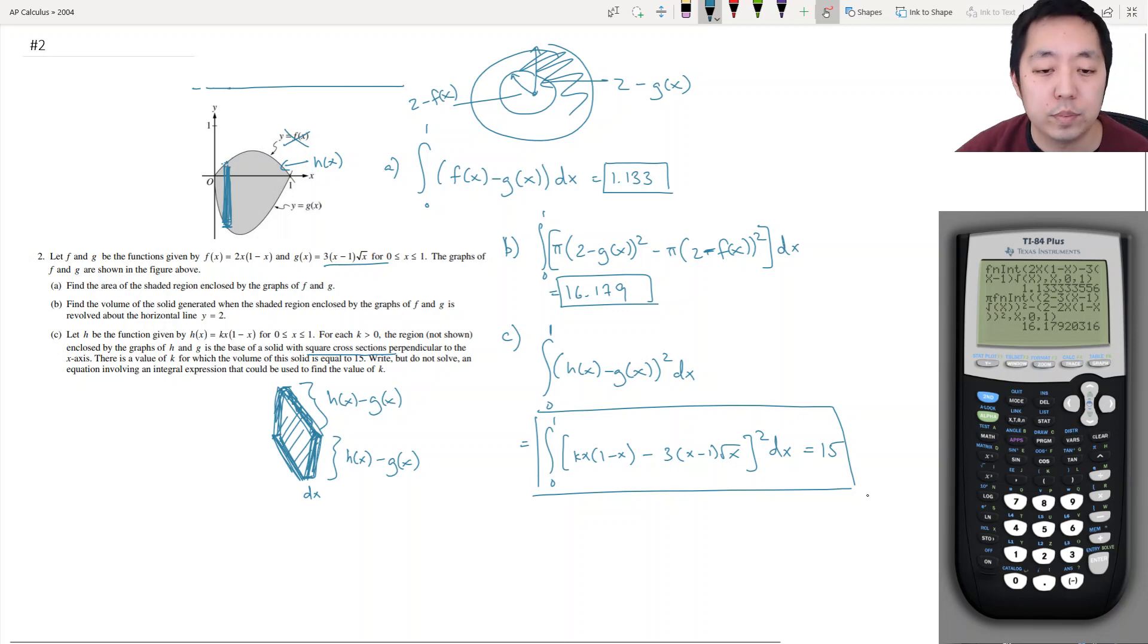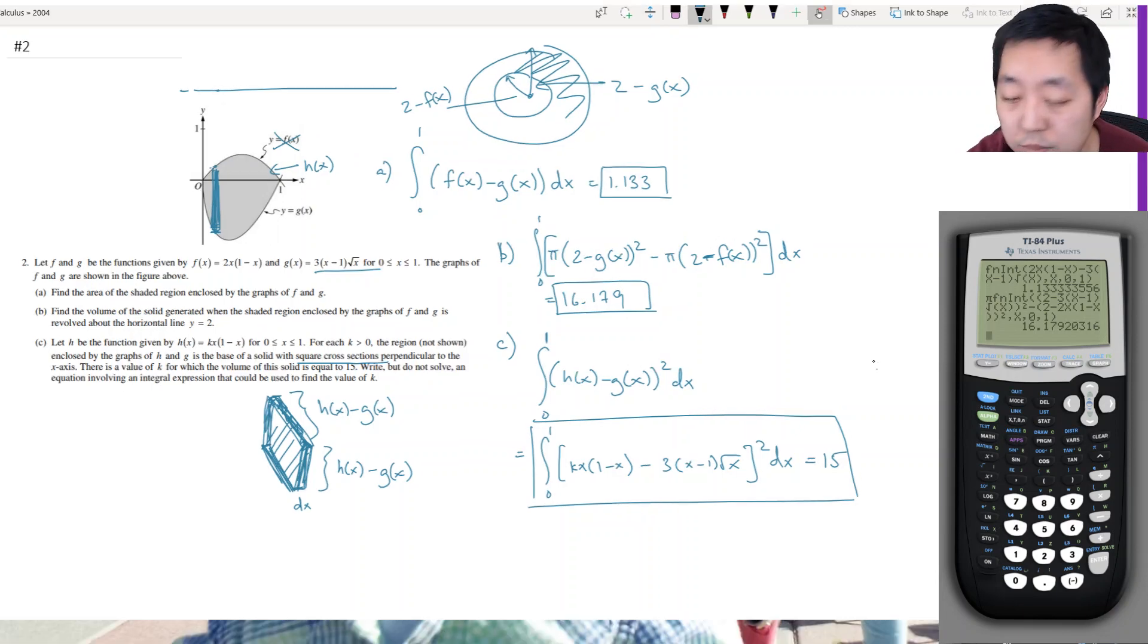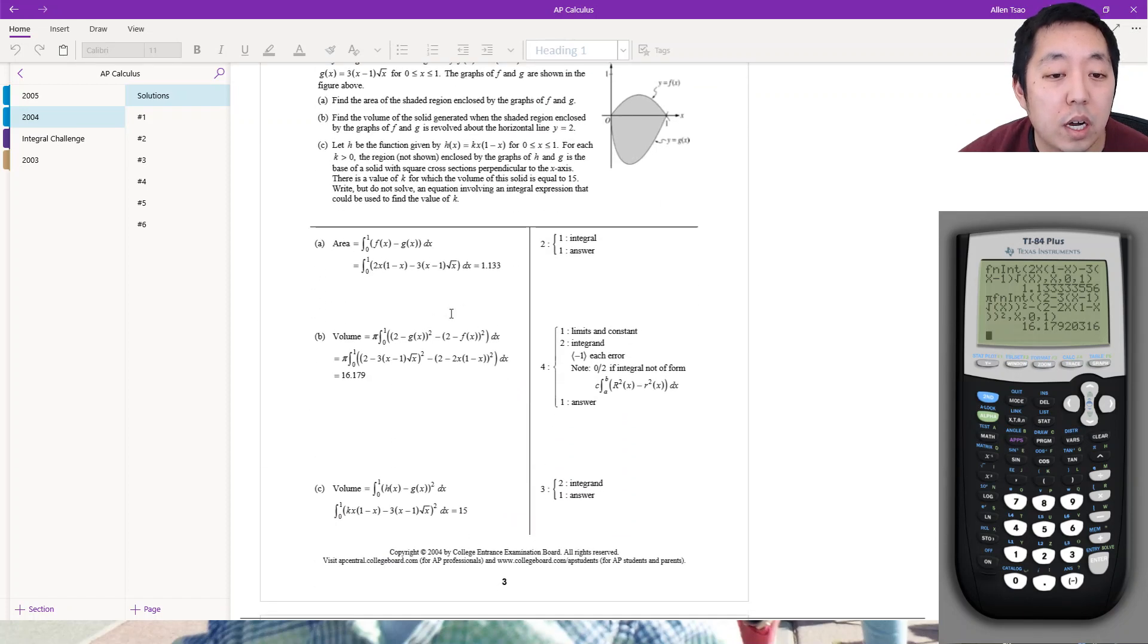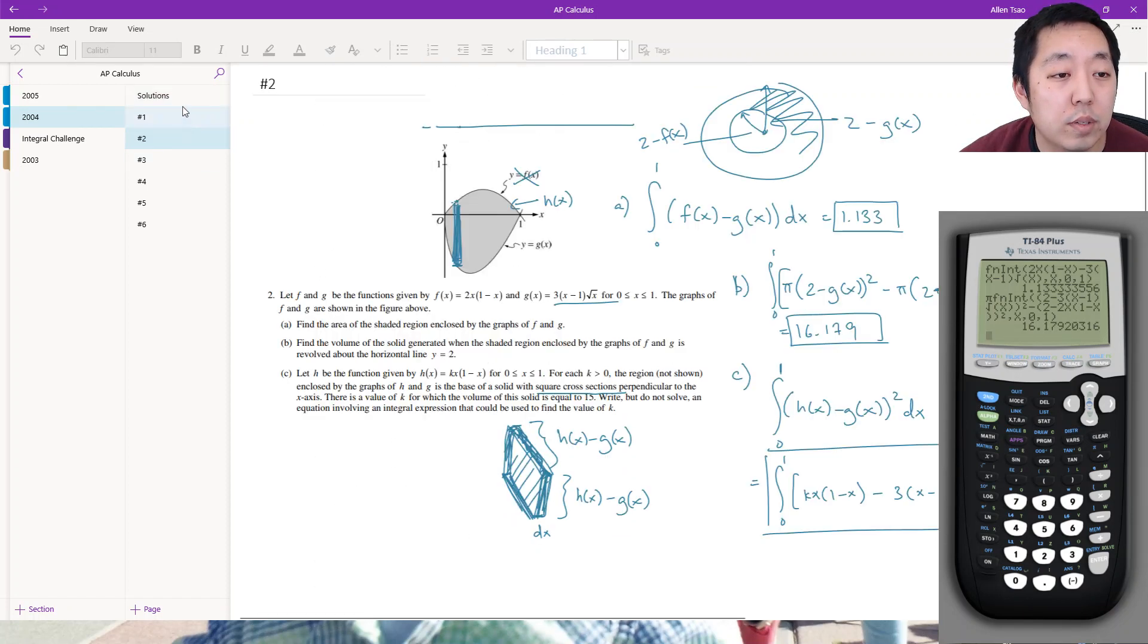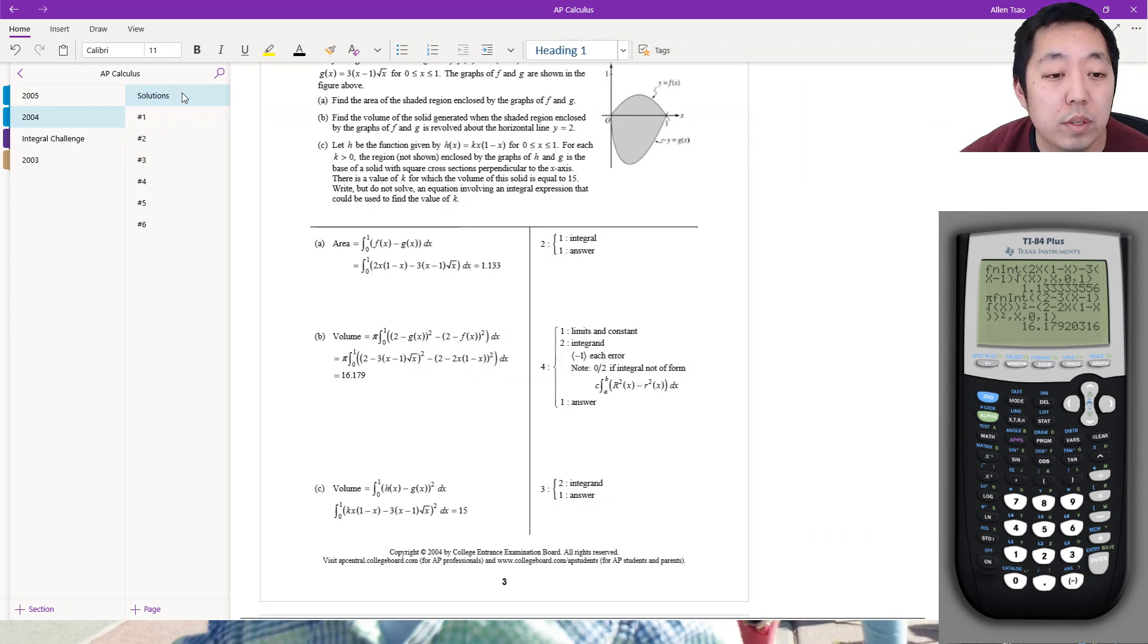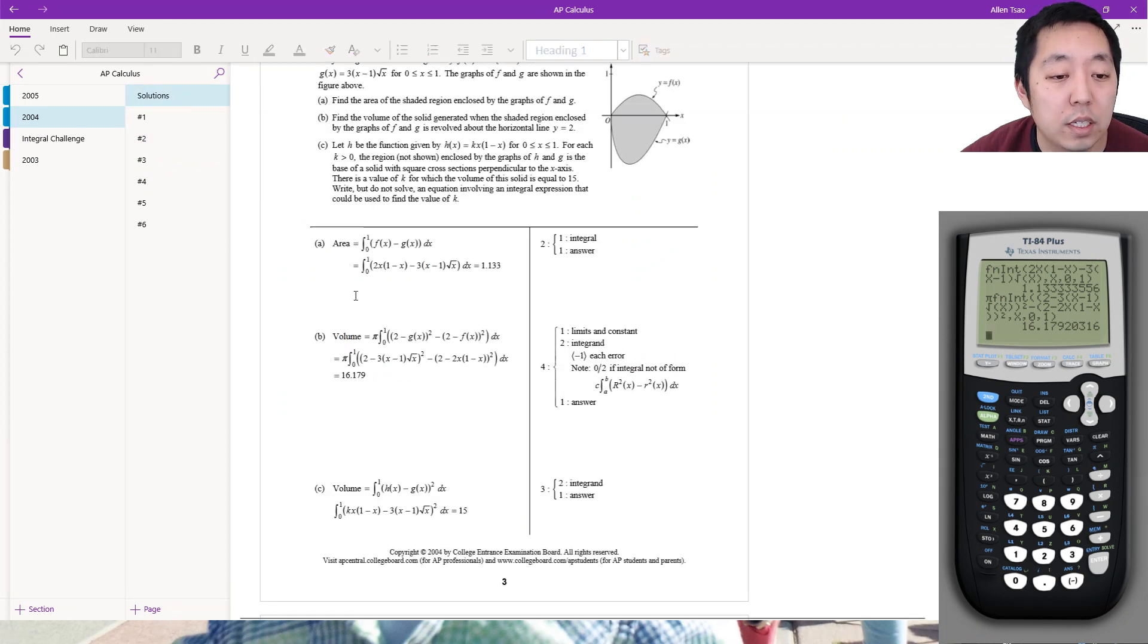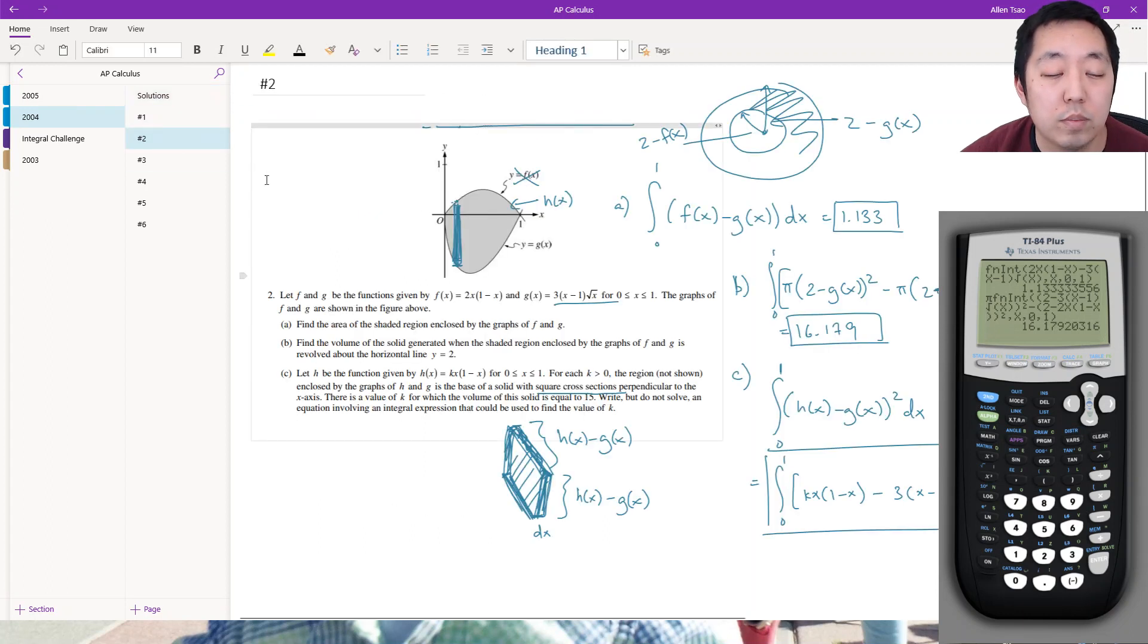Okay. So let's take a look at how we compare to the solutions. 1.133, is that what I got? 1.133, that's correct. 16.179, and then the integral from 0 to 1 of [kx(1 minus x) minus 3(x minus 1)√x] squared dx equals 15. Okay, perfect. So I hope you found that helpful. I'll see you in the next video.